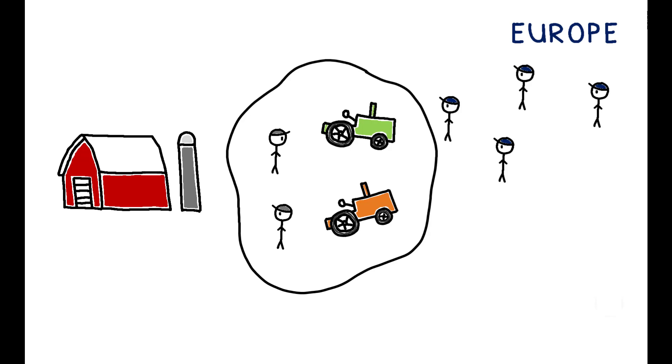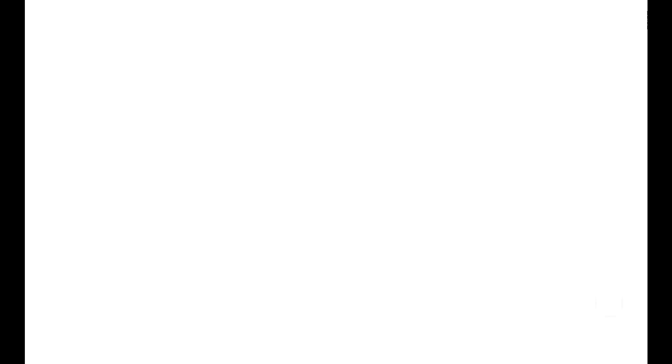This, in turn, discouraged U.S.-born immigrants from moving to these areas. And so, while policymakers intended the immigration restrictions to benefit native-born workers, earnings for this group actually fell in labor markets exposed to the quotas.